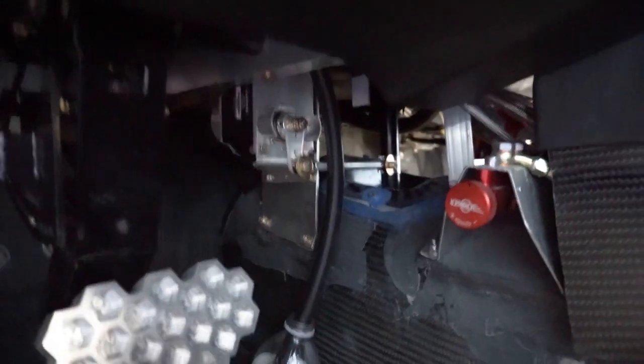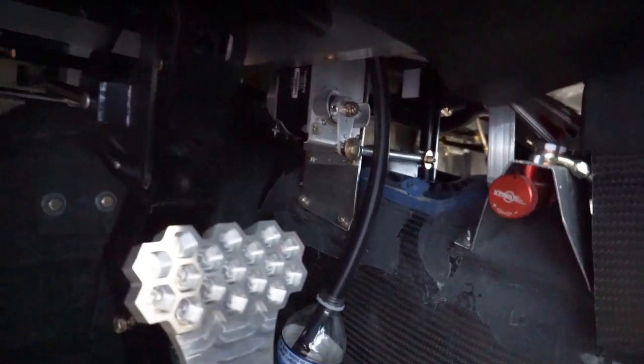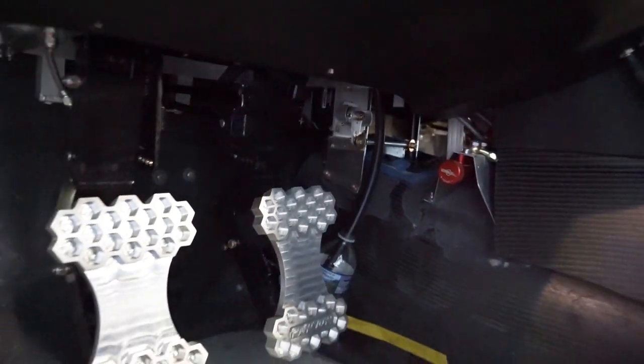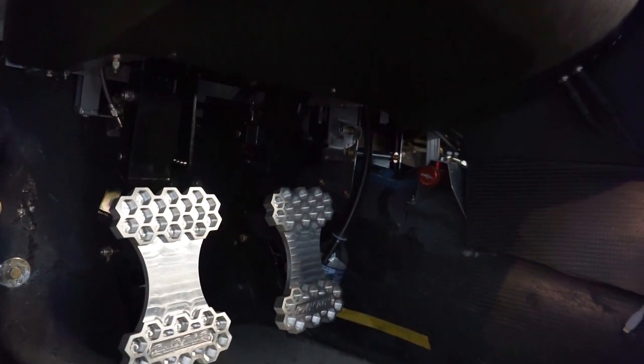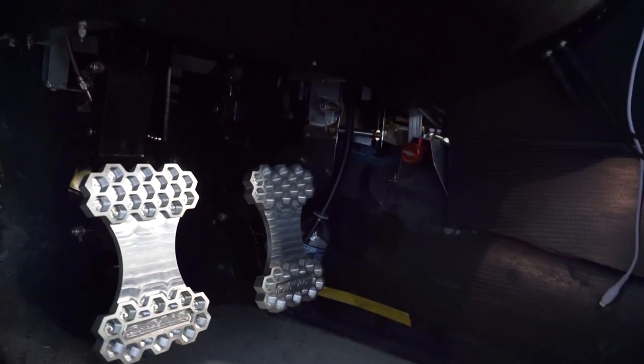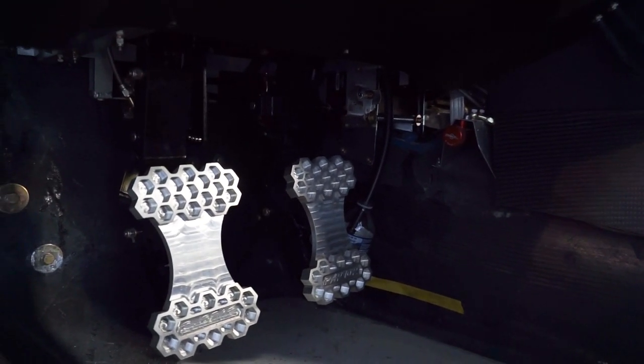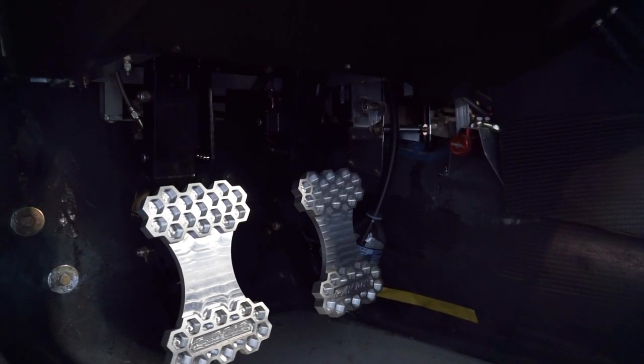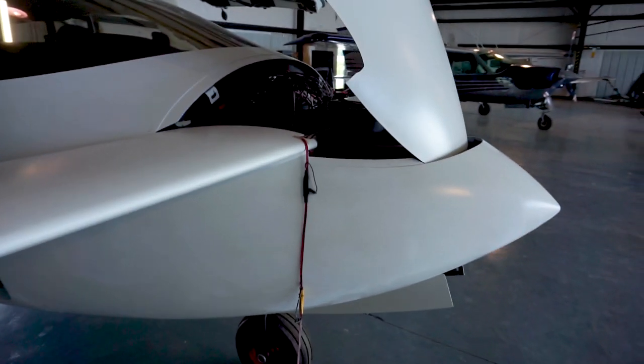Under there you can see the autopilot servo for the aileron controls, and the other one for the elevator is back under there as well. We don't have any autopilot for rudder dampening. I don't think it's necessary on this canard style aircraft, but it's something we could add later if needed.